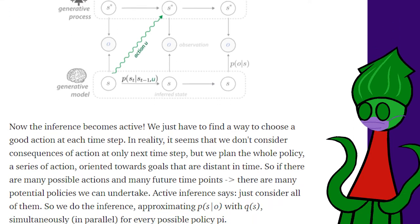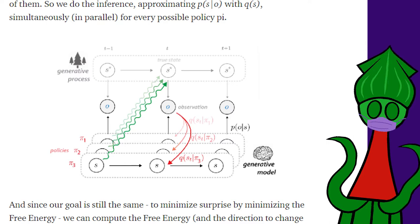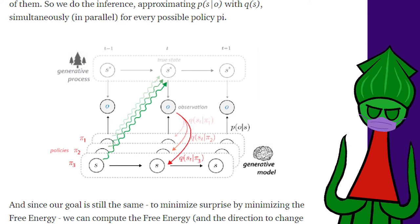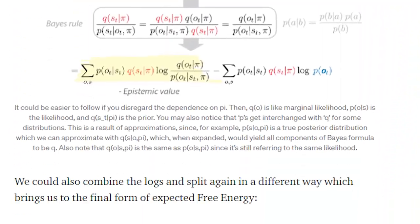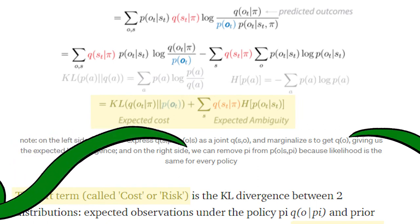At every time step, we approximate these terms for every possible policy. We might like to consider our policies and actions several steps into the future, but we can't predict the future, so we've got to approximate it. I'm skipping a few complicated steps here, but the tutorial's final way to write free energy is like this. The sum of cost and ambiguity.